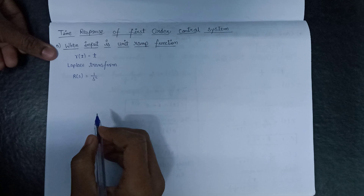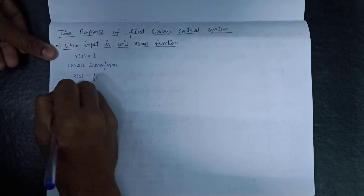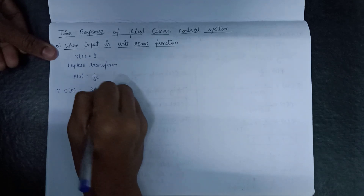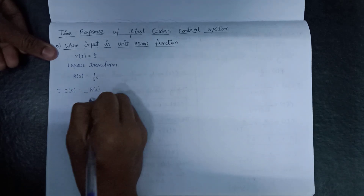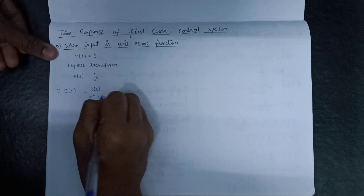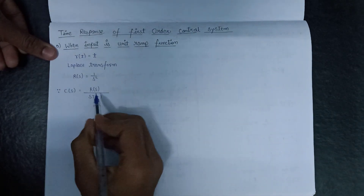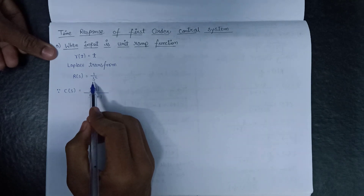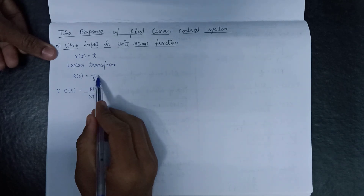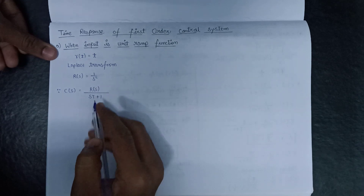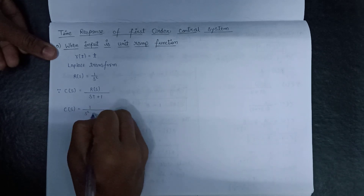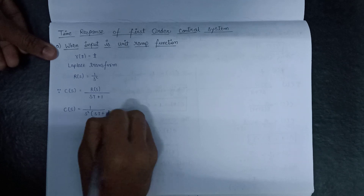The output of the first-order control system is denoted by C(s), and C(s) equals R(s) divided by (sT + 1). We have R(s) = 1/s², so replacing R(s) we get C(s) equals 1 over s²(sT + 1).